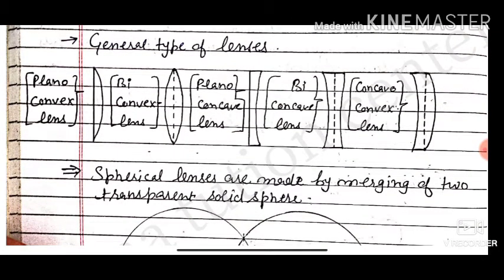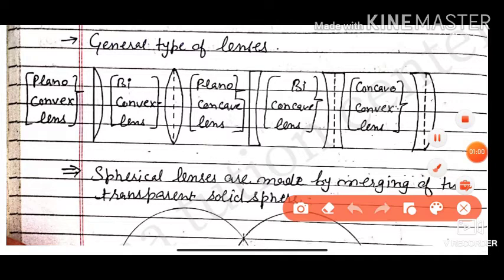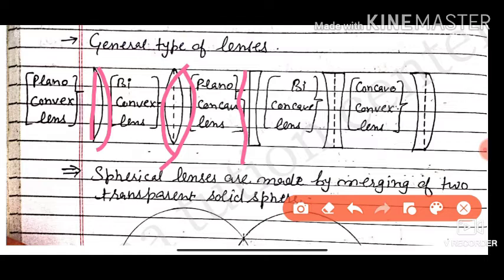The types of lenses are: Plano-convex lens — one side plane, one side convex. Biconvex — both sides convex. Plano-concave — one side plane, one side concave. Biconcave — both sides concave. And concave-convex — one side concave, one side convex.